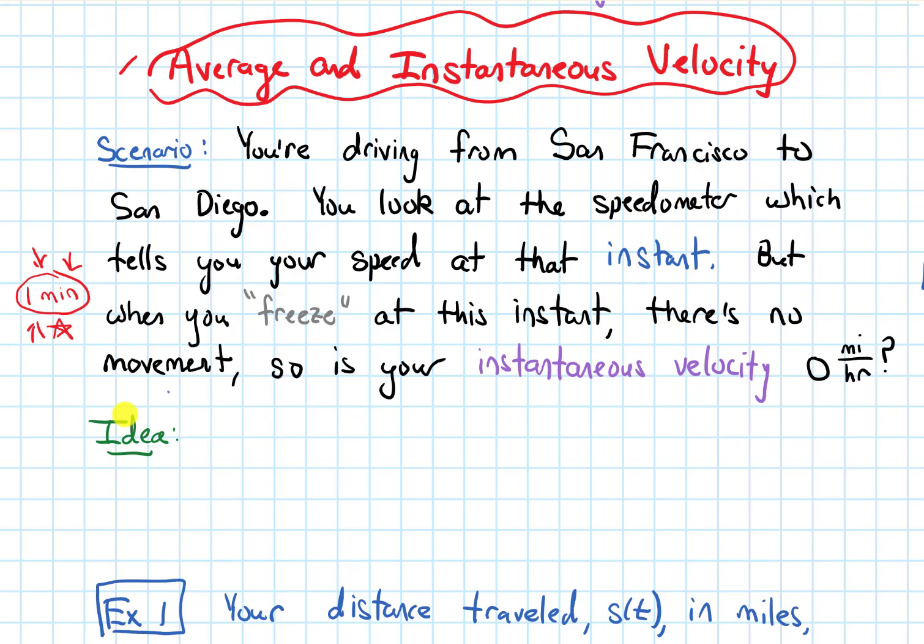So this question is a bit of a paradox because when we ask, what is the velocity right at that instant? At that instant, you know, if we really freeze it down, we're not moving. So how do we measure this instantaneous velocity? And the idea is going to be we are going to use what's called the average velocity.